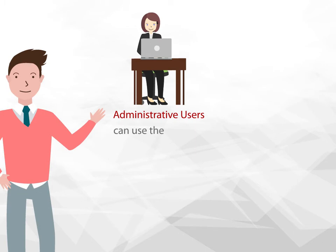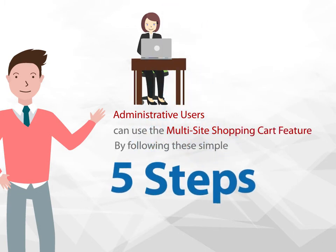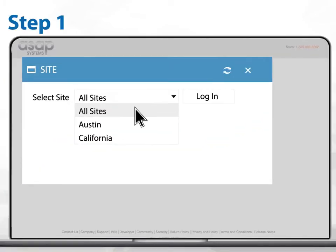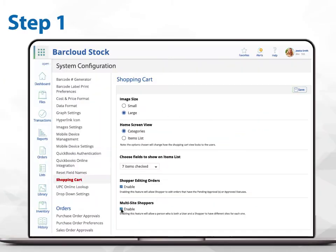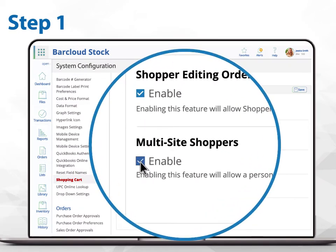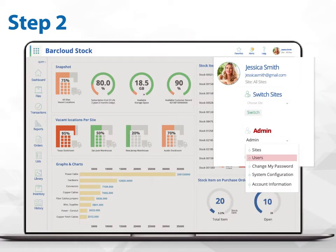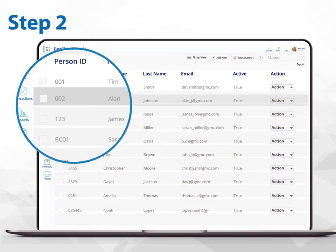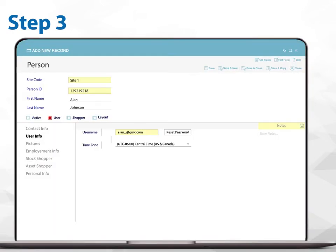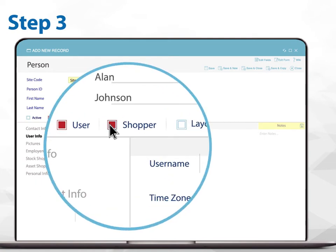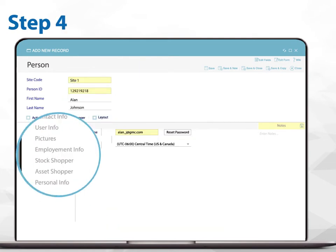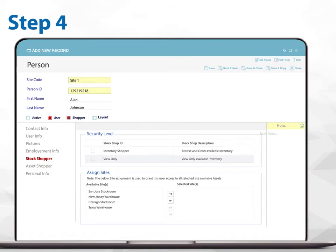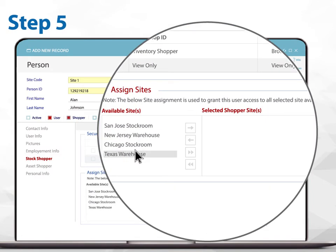Administrative users can use the multi-site shopping cart feature by following these simple five steps. Step one: log into the AllSites account and enable the multi-site shopper feature. Step two: select users and choose an individual from the list. Step three: enable the shopper option. Step four: open the stock shopper tab. Step five: select the inventory sites desired for this shopper to access.